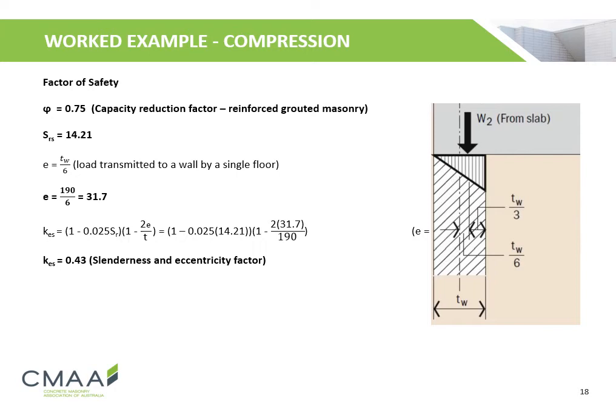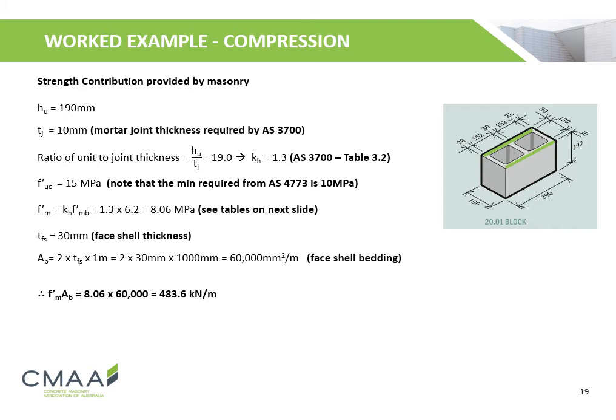The capacity reduction factor phi (φ) is 0.75 for reinforced grouted masonry. The eccentricity of the load transmitted to the wall by the single floor is determined by the thickness of the wall divided by 6, given the load distribution from the slab. Using the calculated eccentricity, the slenderness and eccentricity factor KES is calculated to be 0.43.